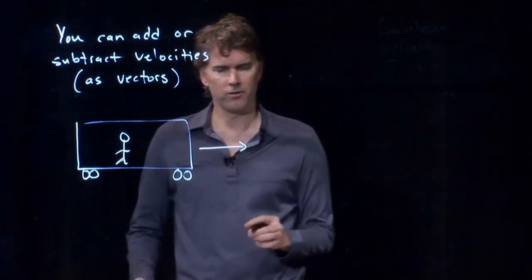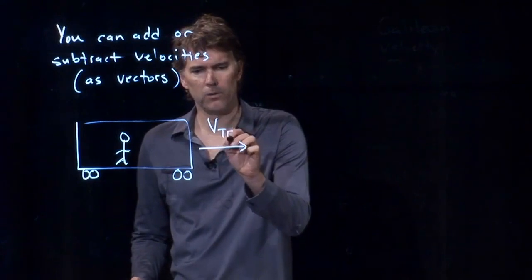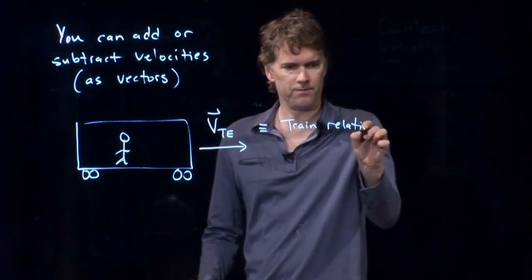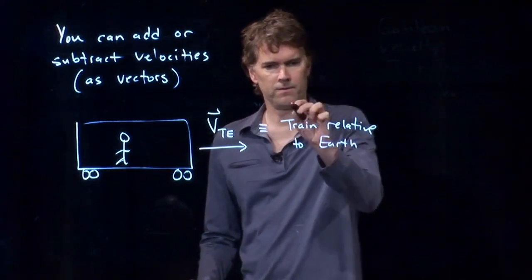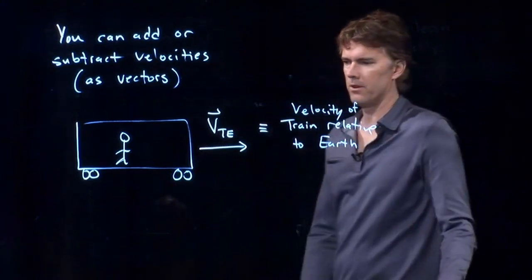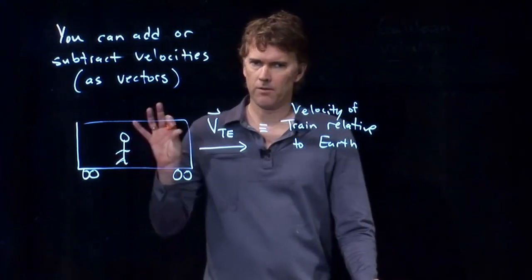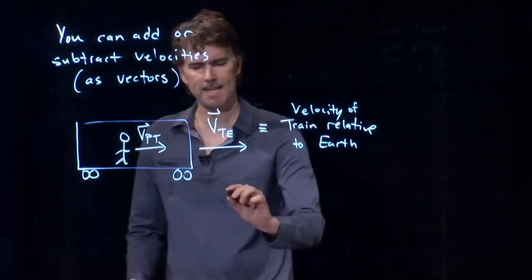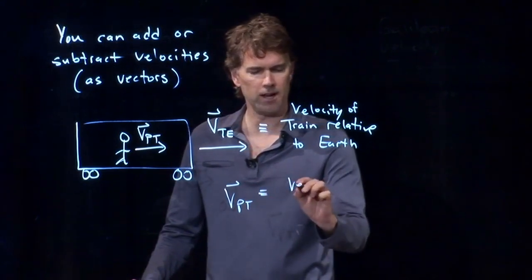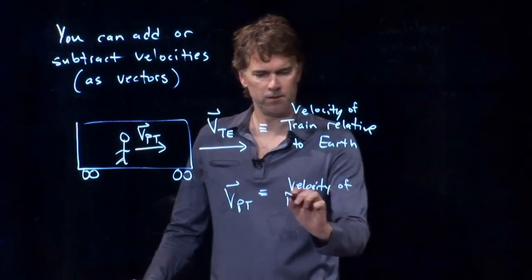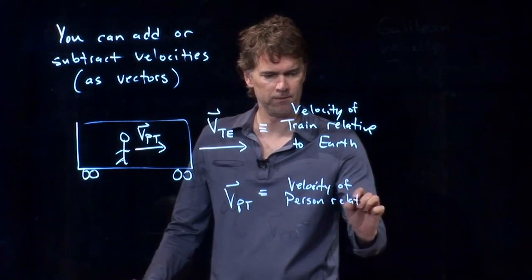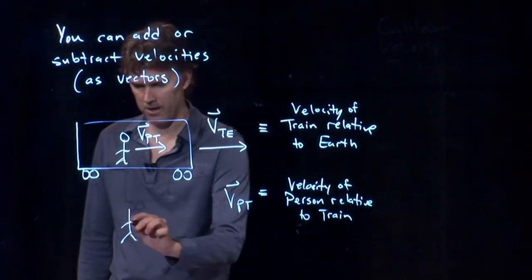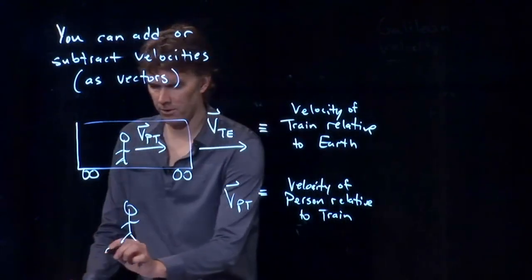So we have the vector for the velocity of the train relative to the Earth. And specifically, it's the velocity of the train relative to the Earth. So V_PT is the velocity of the person relative to the train. But what we really want to know is, what does somebody out here observe? This is the observer in the stationary frame.